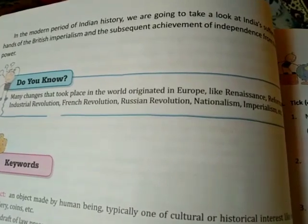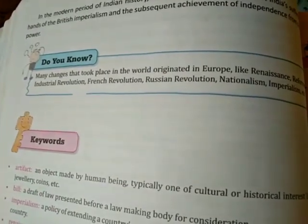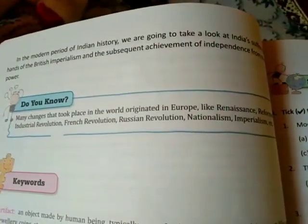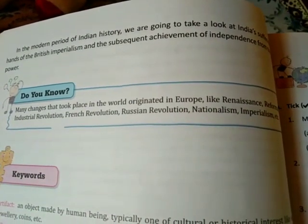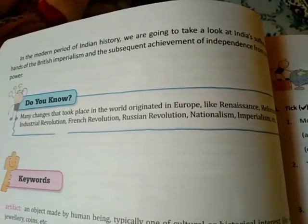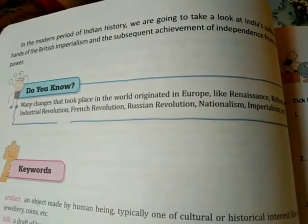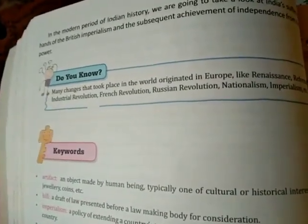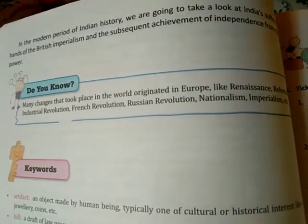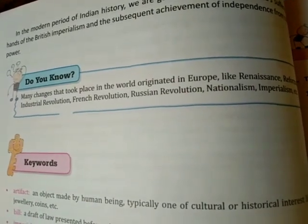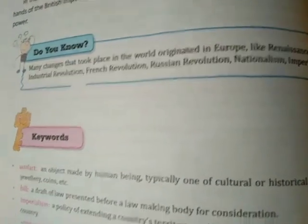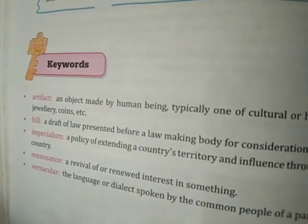Likewise, these things happen in the modern period of Indian history. We are going to take a look at India's suffering at the hands of British imperialism and the subsequent achievement of independence. In Class 8 we will study how Indians were being suffered by the British. Imperialism means the policy of expanding its boundaries to use the resources of other territories. Many changes that took place in the world originated in Europe — like Renaissance, reforms, industrial revolution, French revolution, Russian revolution, nationalism, imperialism — and they affected us also.